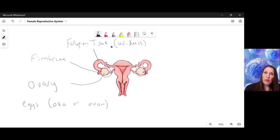And here we have our uterus. And the inner lining of the uterus is called the endometrium.